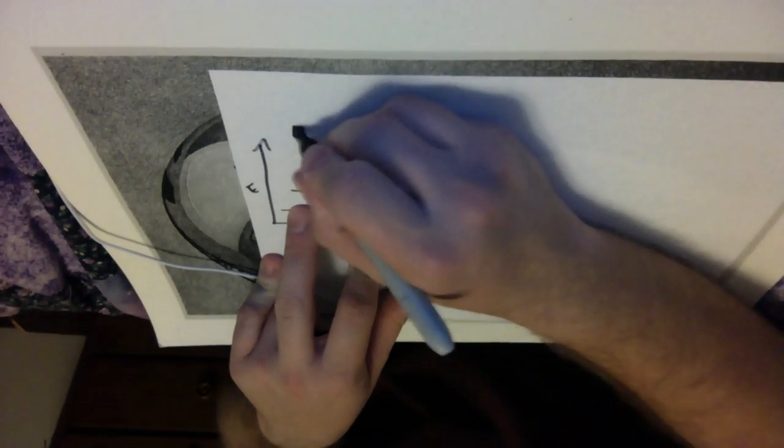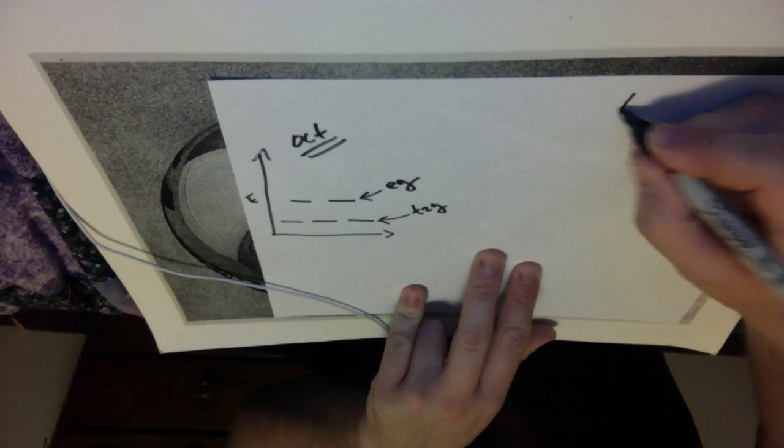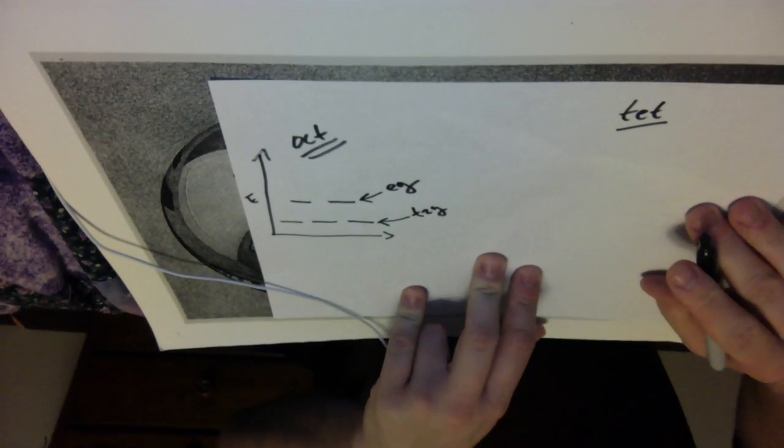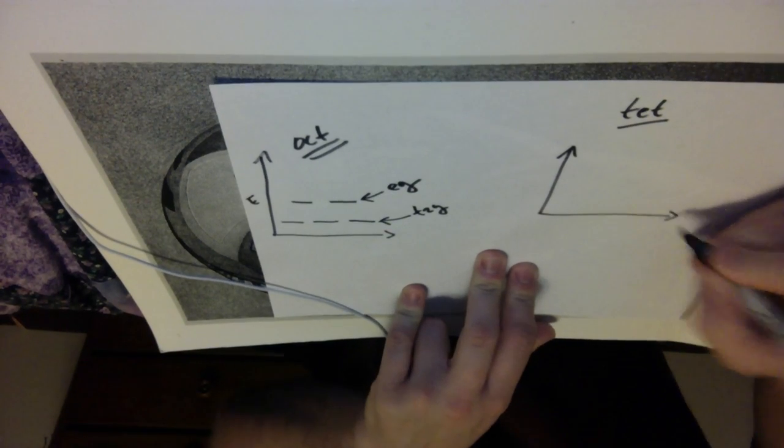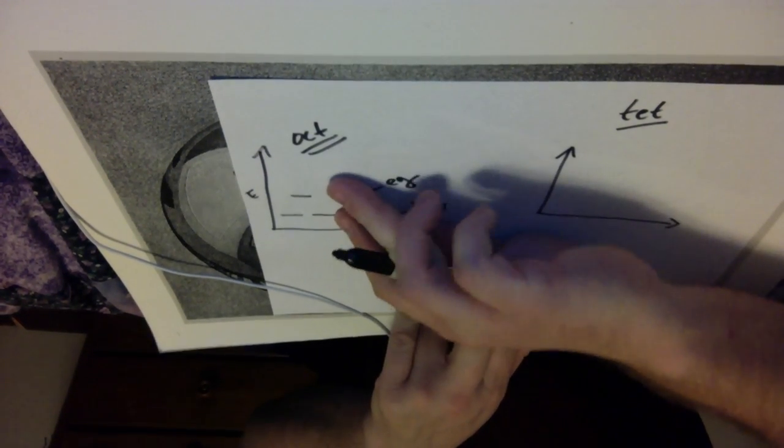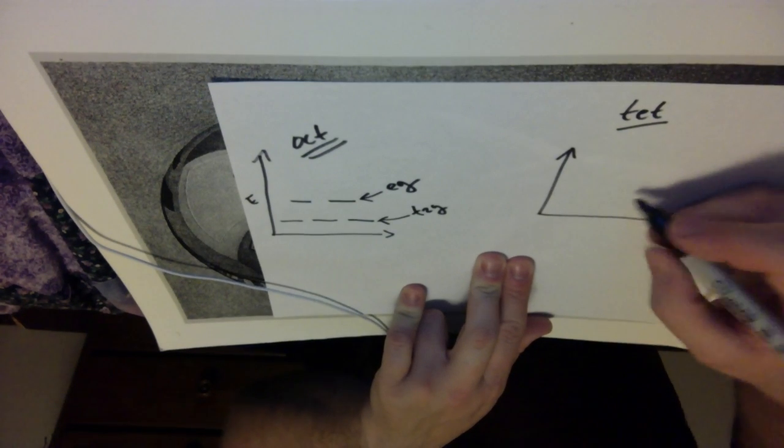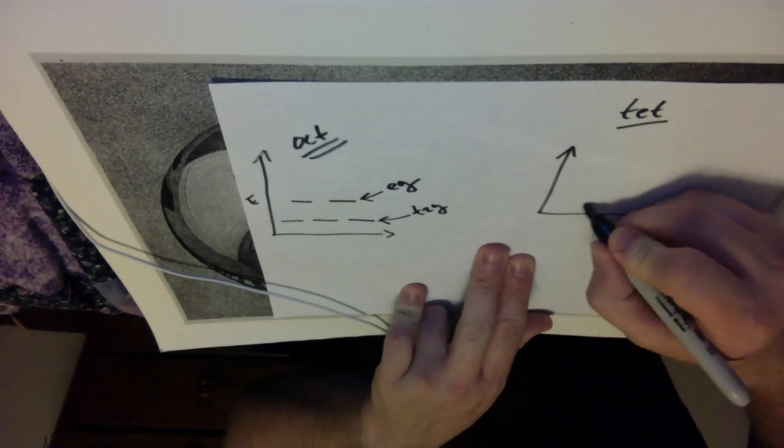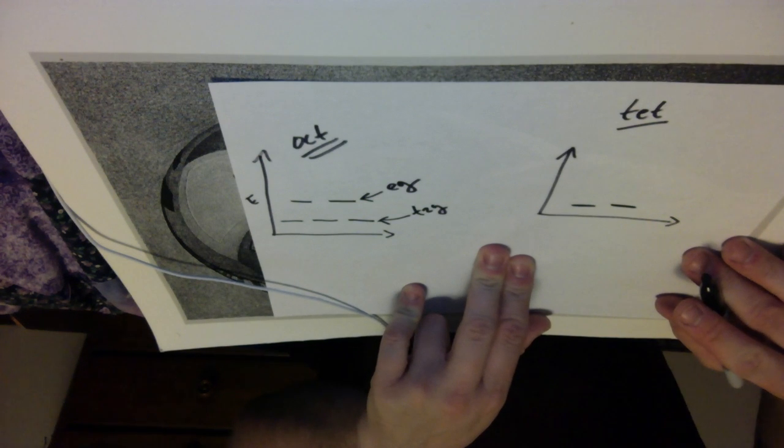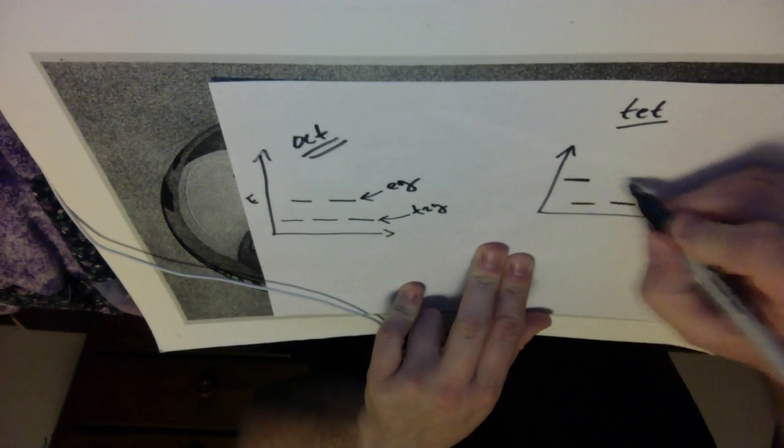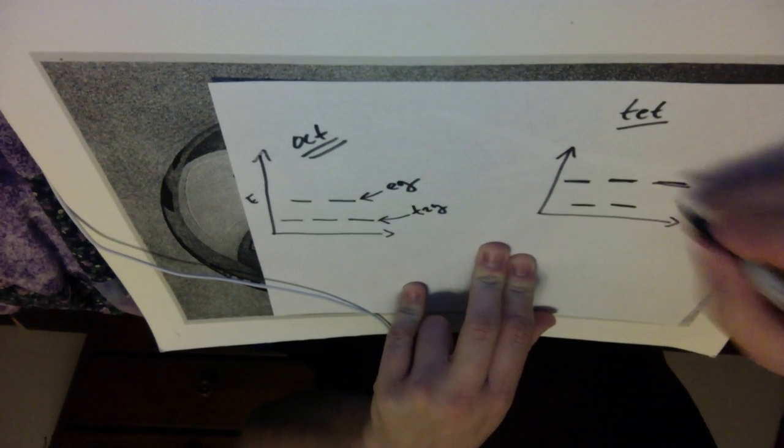And so this is octahedral, and then let's just contrast that to the tetrahedral geometry. So my tetrahedral geometry, what we get is we get the swap over, we get a swap of the eg and t2g orbitals. So what I get is I get two orbitals down here and then one, two, three orbitals here. So my t2g and my eg orbitals flip.